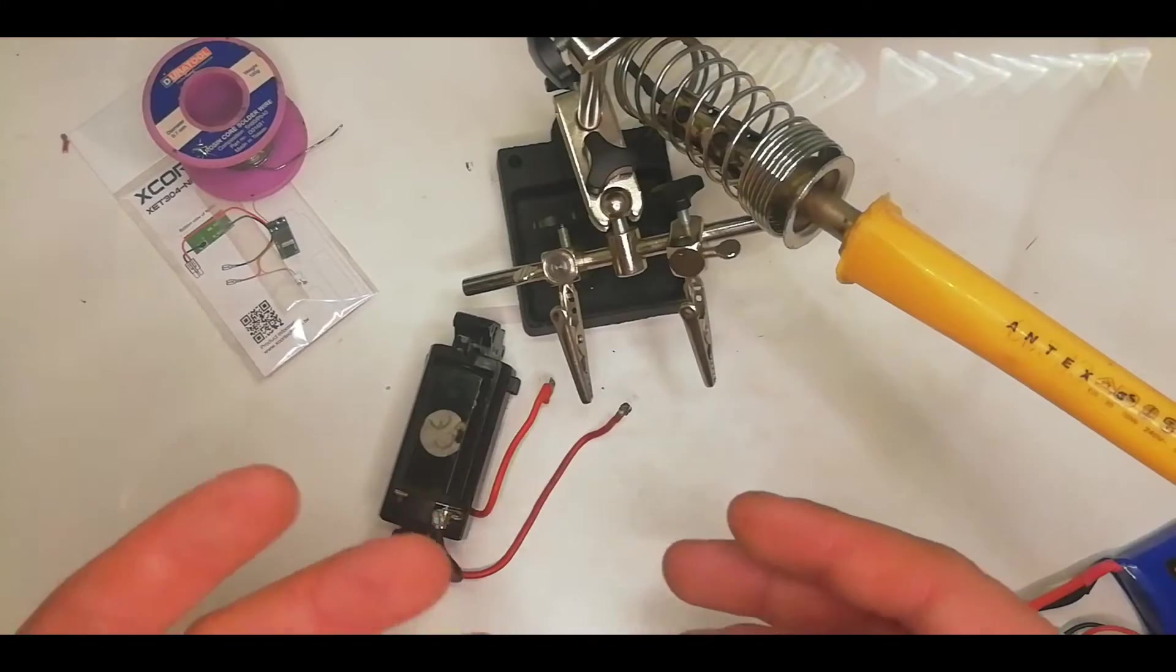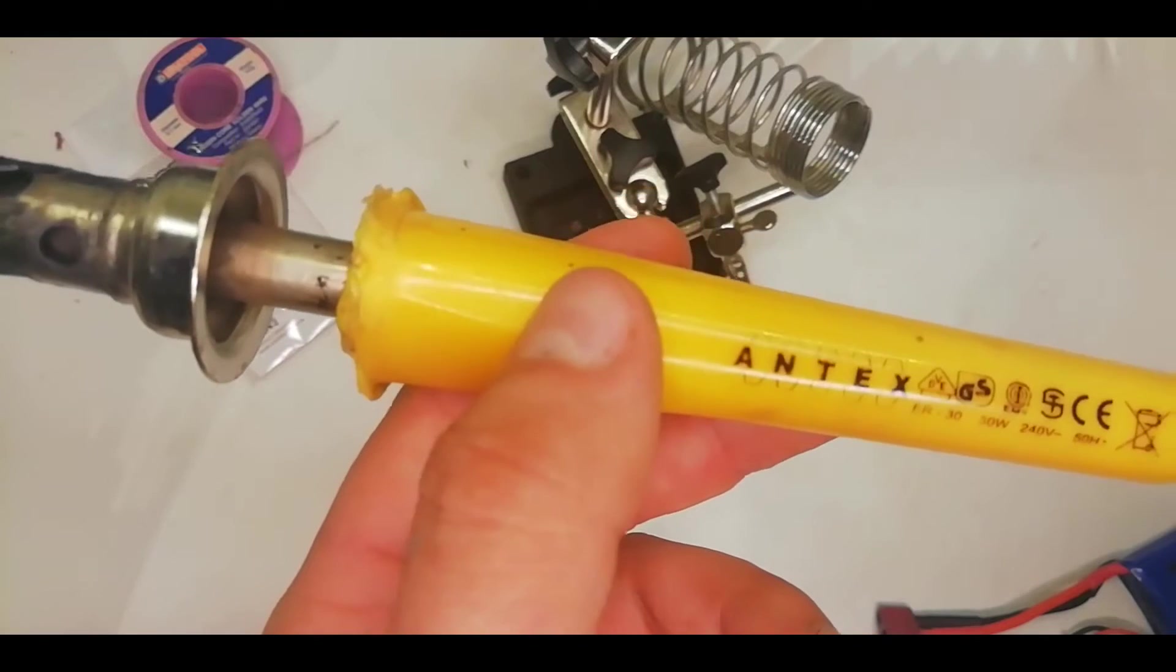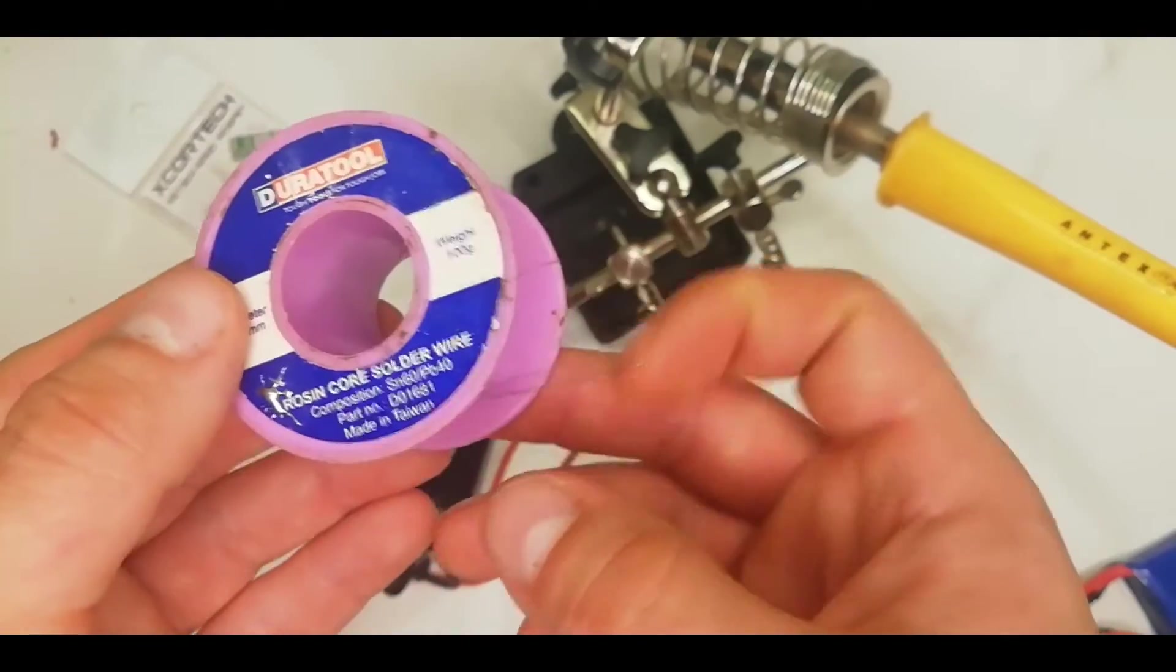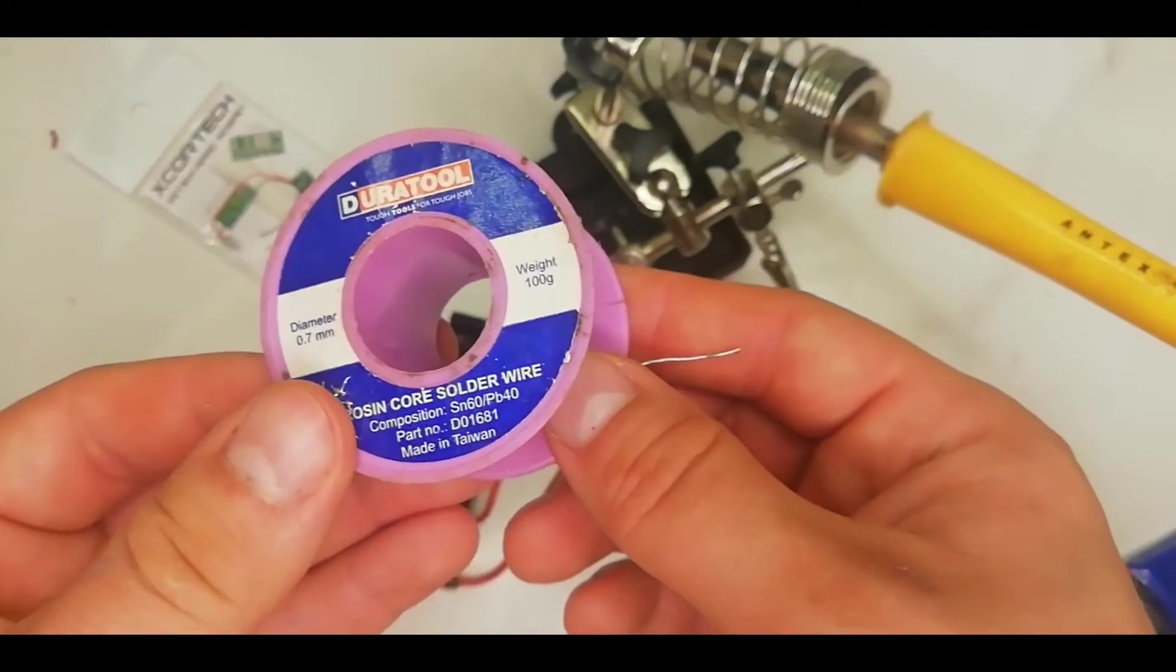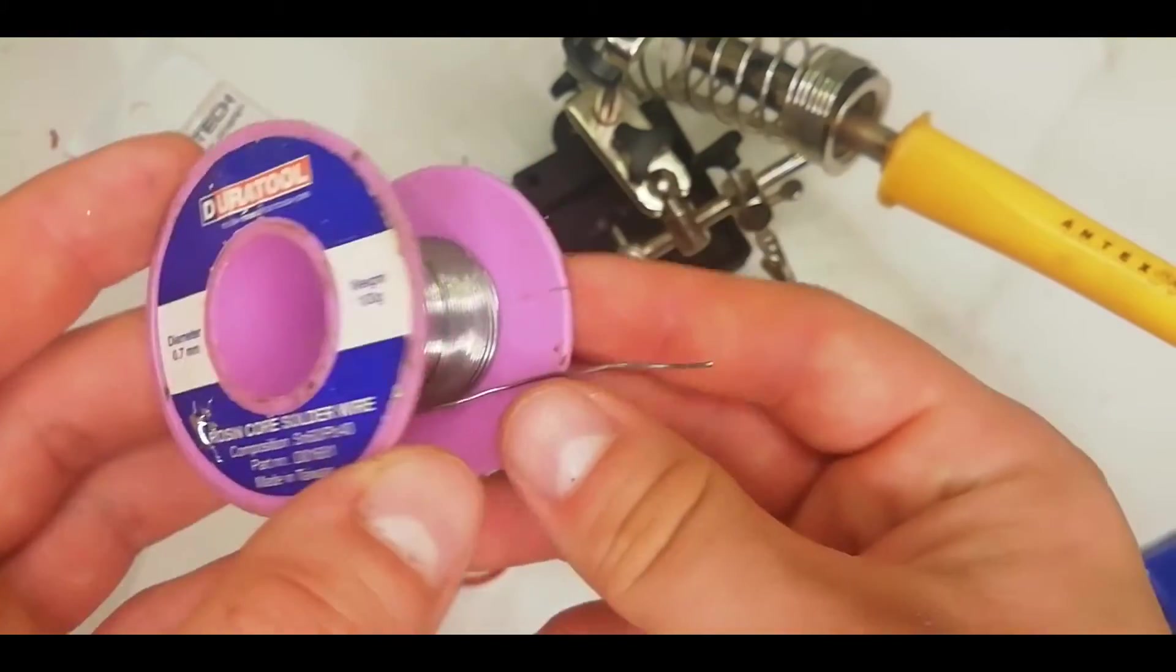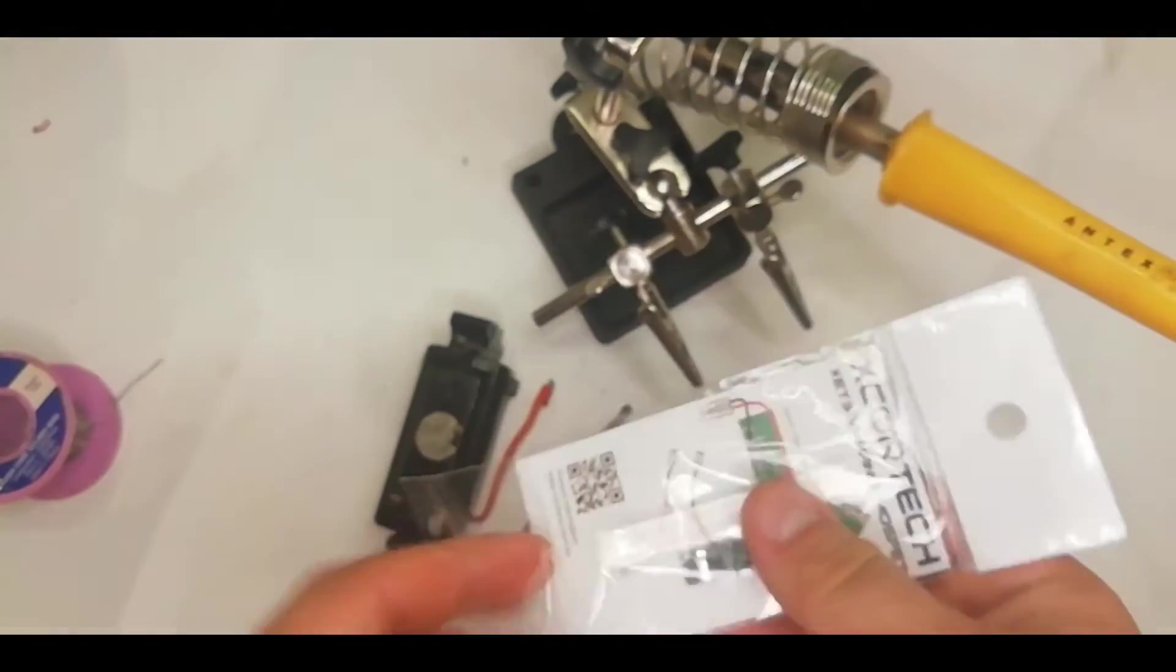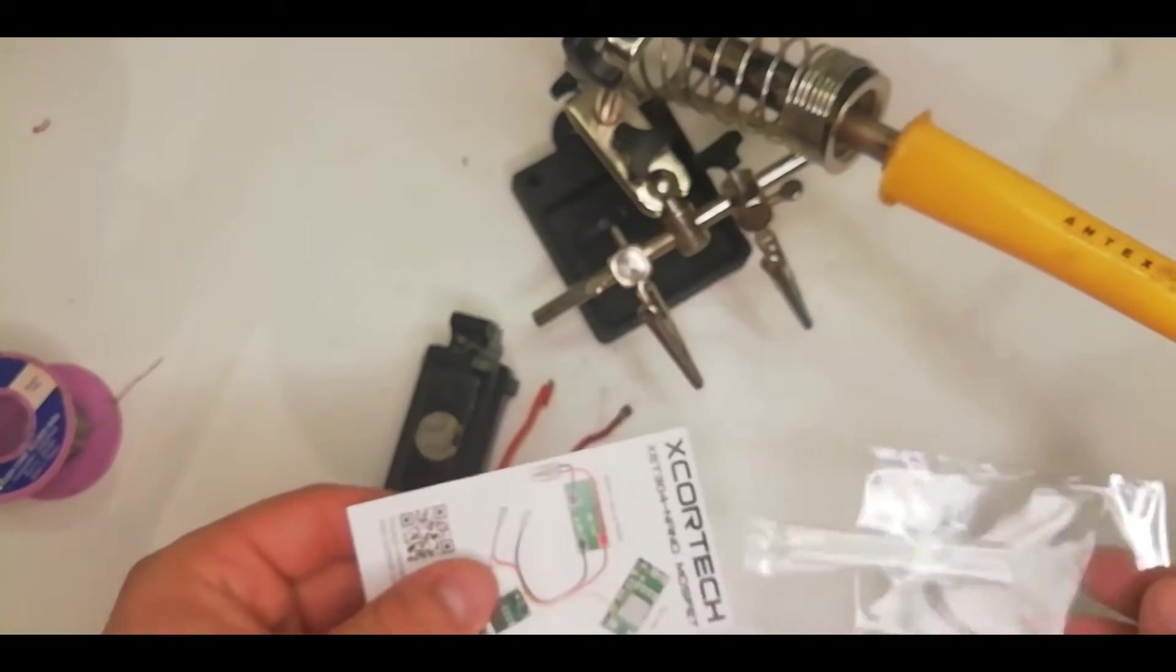You do need to know how to solder to wire an airsoft MOSFET, so you'll need a soldering iron and some solder. My soldering iron is a 30 watt Antec soldering iron. For the majority of the soldering you'll need to do on an airsoft gun, 30 watts should do you fine. I'm using Duratul leaded solder. In my opinion, lead-free solder isn't as good as leaded solder. For this job we shouldn't need any soldering flux, because this is Rosencore solder, it's already got the flux built in. We're going to remove the MOSFET from the packaging and it comes with heat shrink tubing and a very basic instruction manual.